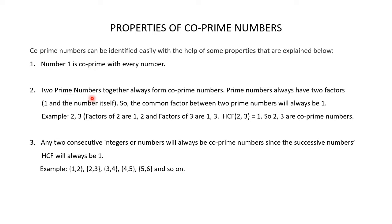Two prime numbers together always form co-prime numbers, because prime numbers always have only two factors: 1 and the number itself. So the common factor between two prime numbers will always be 1. For example, consider 2 and 3. Their factors are 1 & 2, and 1 & 3 respectively. So the HCF of 2 and 3 is 1, making them co-prime numbers.